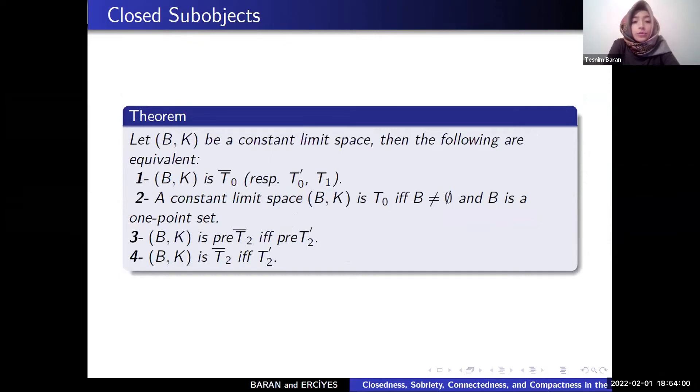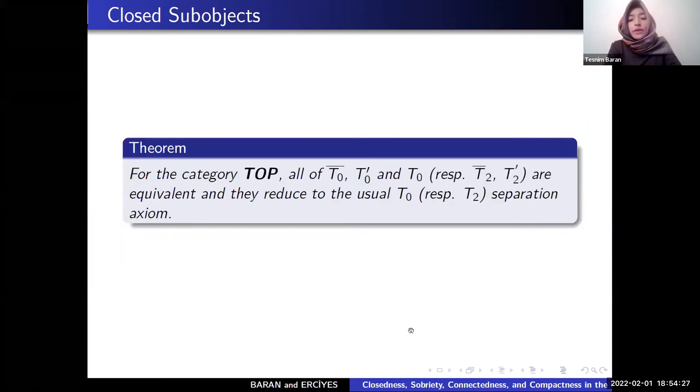We proved let (B,K) be constant limit space. (B,K) is T0 bar if and only if T0 prime. (B,K) is T0 if and only if B is empty and B is one empty point set. And prehouse bar if and only if prehouse prime, pretake bar if and only if pretake bar.